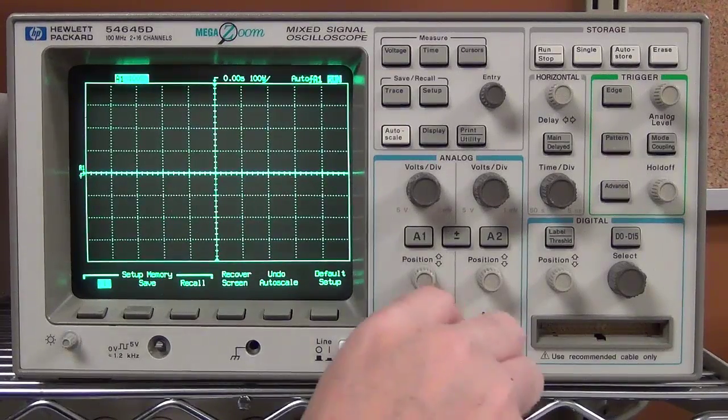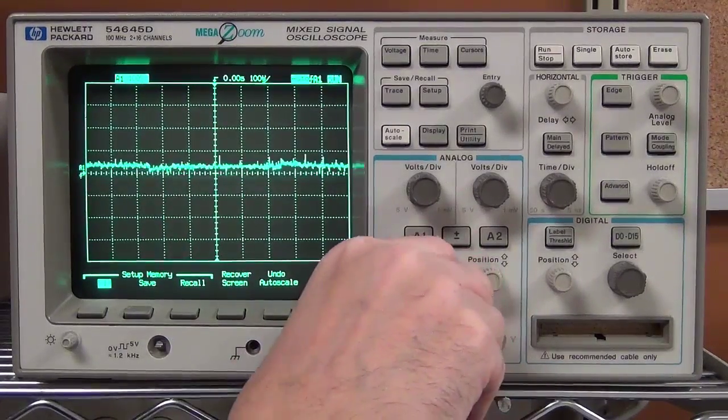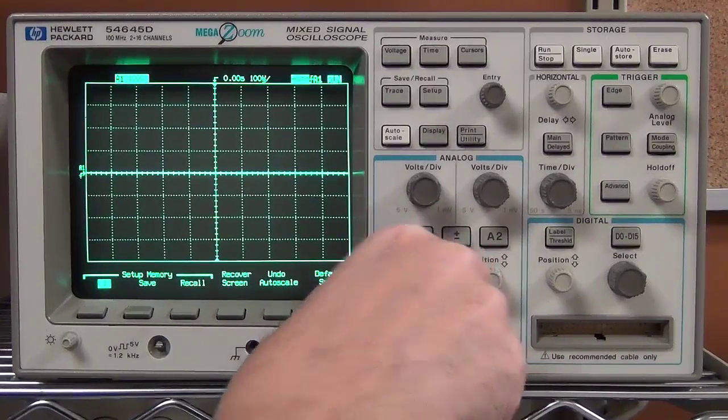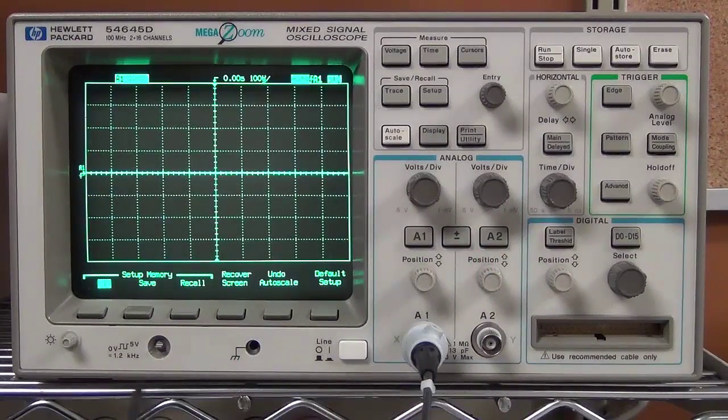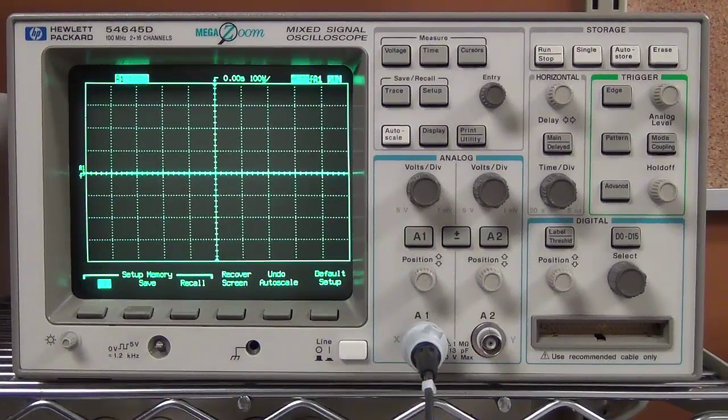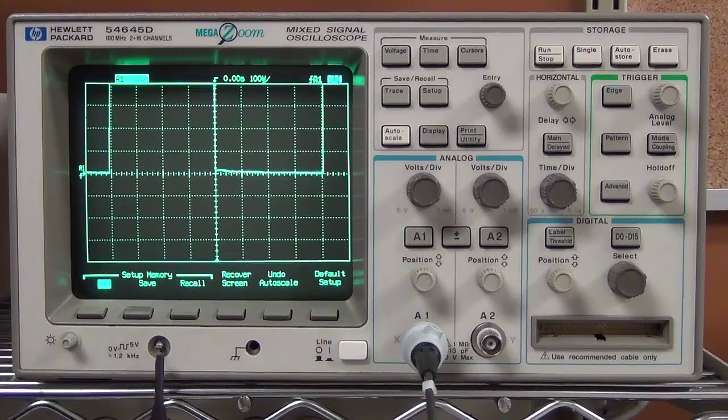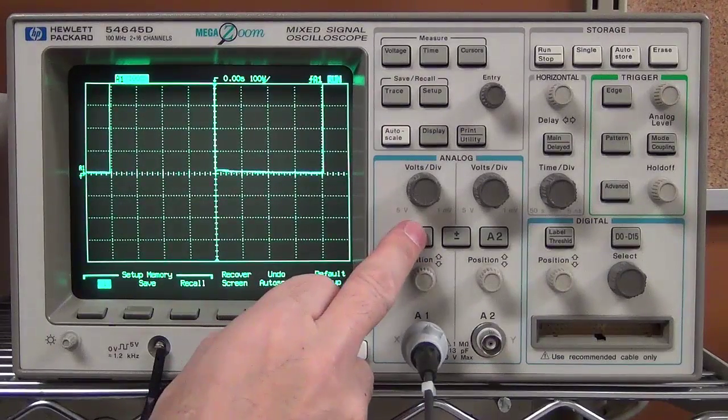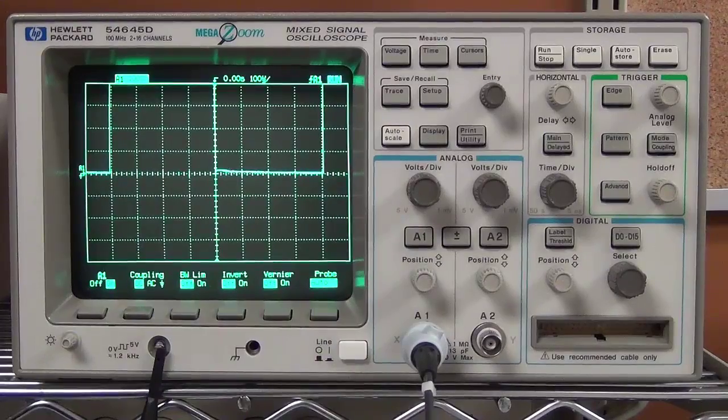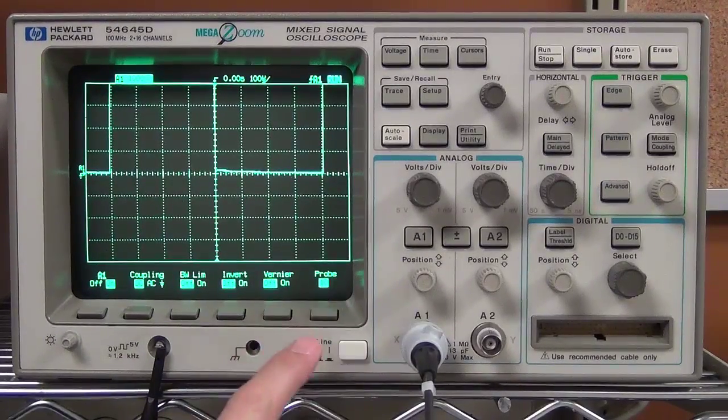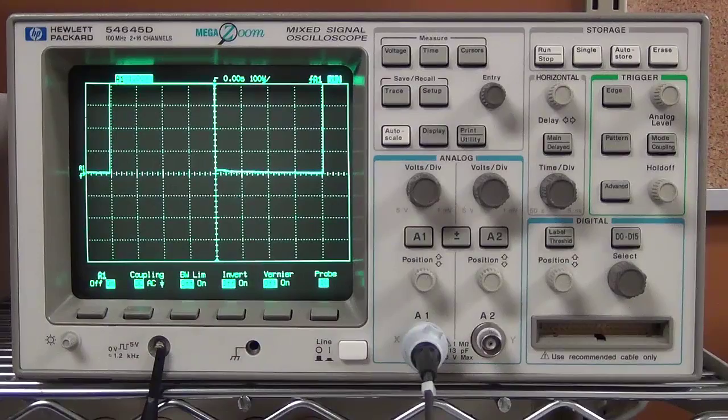So that's what I just did. Now we're going to hook up our scope probe, and if you've never used your probe with the scope before, you should calibrate it. I'm going to set the scope probe to 10 times, and then I'm going to click the input channel and make sure that it's also set to 10 times, so that the scope probe and the input channel match.